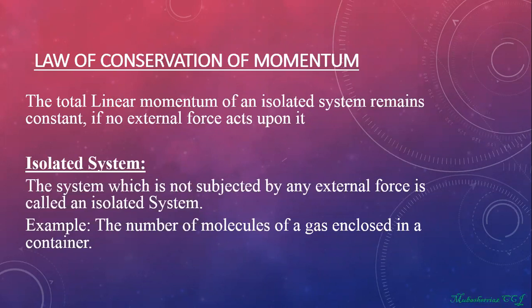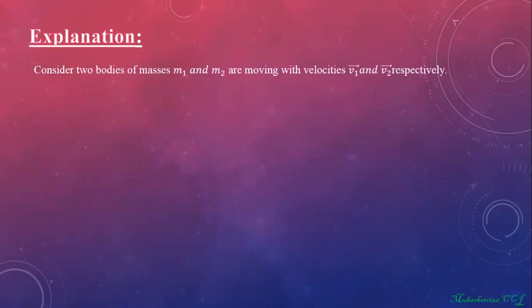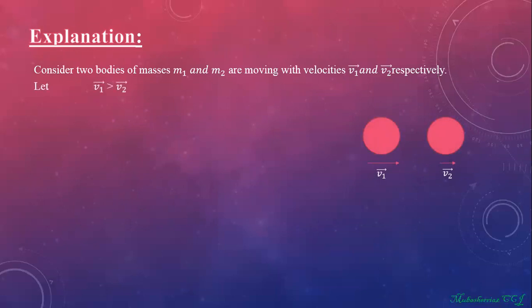Let me explain the Law of Conservation of Momentum — how the total momentum before a collision and the total momentum after a collision will remain the same. For this purpose, let me consider an example which consists of two bodies having masses m1 and m2, and they are moving with velocities v1 and v2 respectively. v1 is the velocity of the first ball whose mass is m1, and v2 is the velocity of the second ball, and they are moving along the same line in the same direction. Let us suppose the velocity of the first ball is greater than the velocity of the second ball.